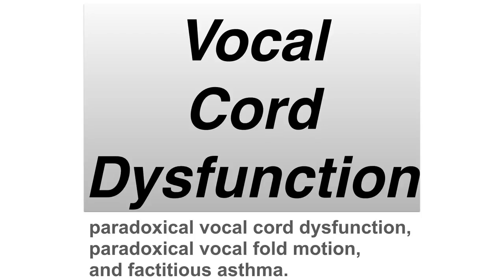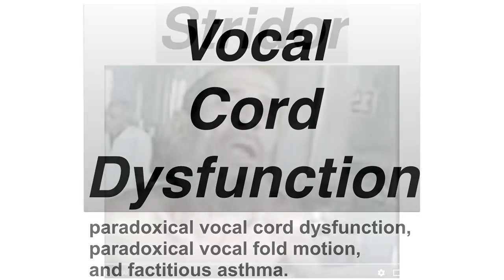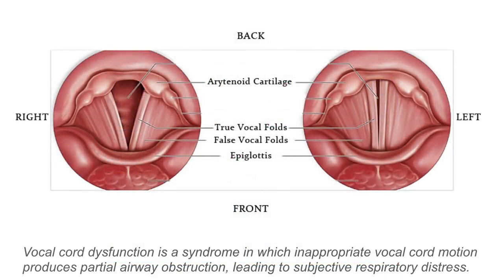Vocal cord dysfunction is also known as paradoxical vocal cord dysfunction, paradoxical vocal fold motion, and factitious asthma. Vocal cord dysfunction will show up clinically as a patient in stridor. Vocal cord dysfunction is a syndrome in which inappropriate vocal cord motion produces partial airway obstruction leading to subjective respiratory distress.